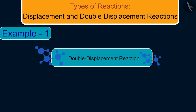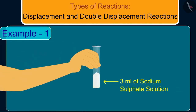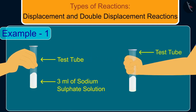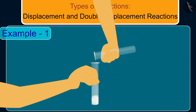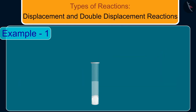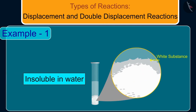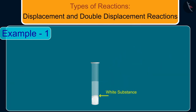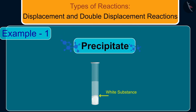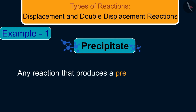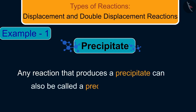Let us understand double displacement reactions with the help of an example. Take about 3 ml of sodium sulfate solution in a test tube. In another test tube, take about 3 ml of barium chloride solution. Mix the two solutions. You will observe that a white substance which is insoluble in water is formed. This insoluble substance formed is known as a precipitate, and any reaction that produces a precipitate can also be called a precipitation reaction.